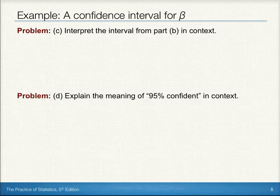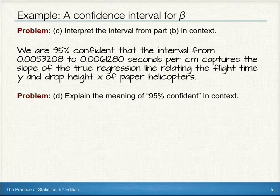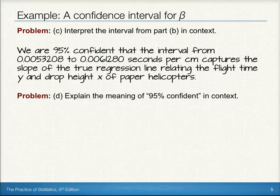So, to interpret that interval in context, we can say that we're 95% confident the interval from 0.0053 to 0.0061 seconds per centimeter captures the slope of the true regression line relating the flight time y and drop height x of the paper helicopters.